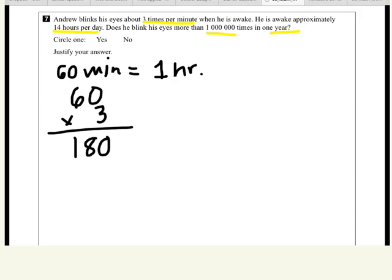So, what does that represent? 180 what? Blinks. Per? Per an hour. Good, per hour, excellent.